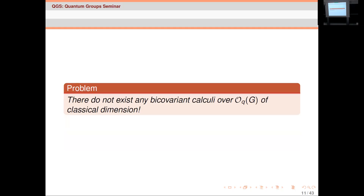The question is: can we find bicovariant calculi for O_q(G), with the hope that these conditions will show the calculus is unique? This is where the first major problem arose, observed around the end of the 1990s: a result of Schmüdgen (and possibly Müller) proved that there basically doesn't exist a bicovariant calculus of classical dimension. You can remove the condition and have covariance on just one side, but that's very artificial. This was a big stumbling block and led many people to say maybe this approach isn't a good one.